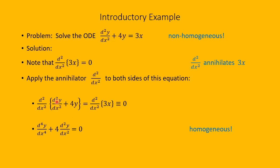The second derivative of the left side equals the second derivative of the right side. The second derivative of this gives the fourth derivative of y with respect to x plus 4 times the second derivative of y with respect to x. On the other side, the second derivative of 3x equals 0. So we started with a non-homogeneous equation of order 2, and ended up with a homogeneous equation of order 4.